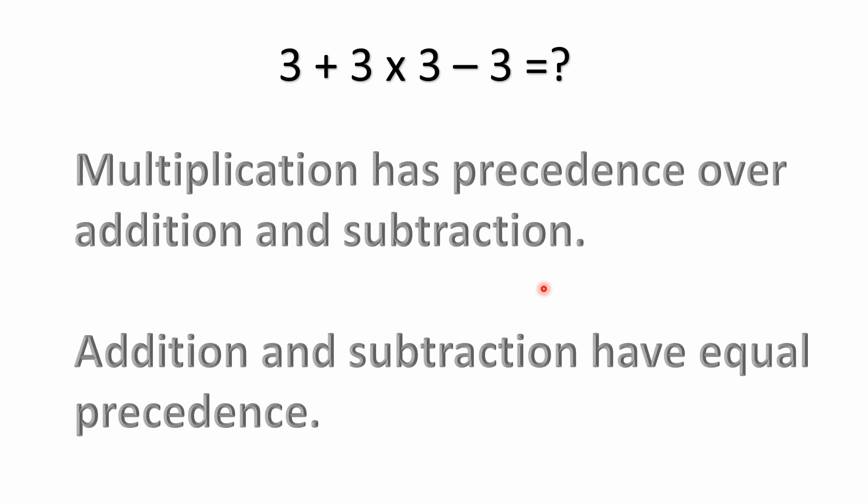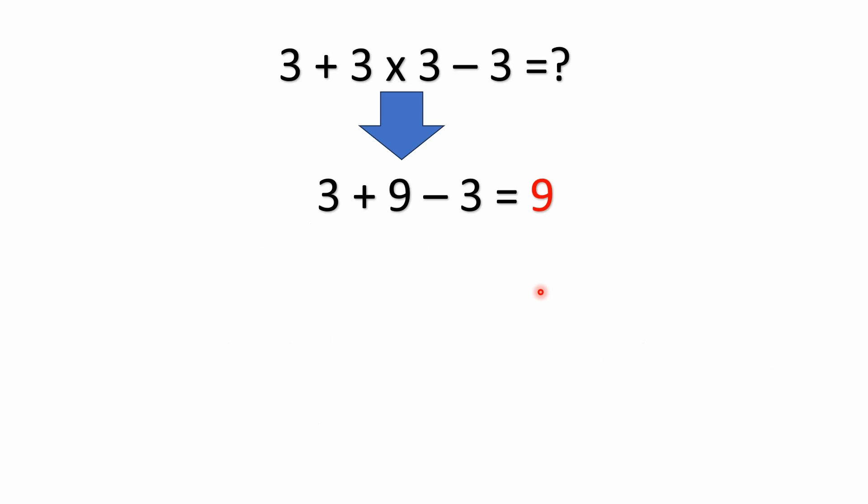You can't take 3 plus 3 times 3 and then minus 3 in this problem. That would be incorrect. So what you do here is first of all we do the multiplication. 3 times 3 is 9. Then 3 plus 9 is 12. 12 minus 3 equals 9. So the answer here is 9.